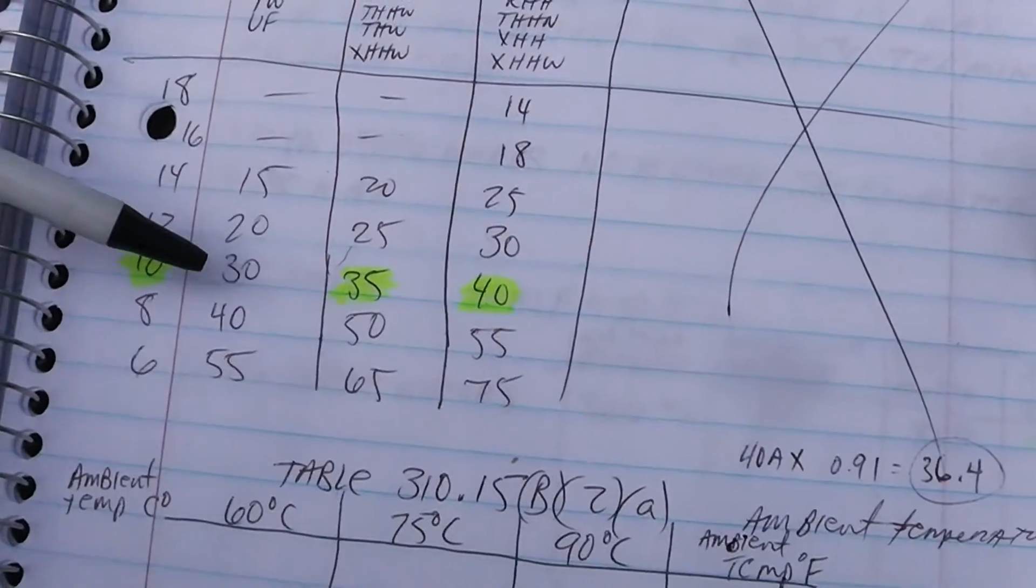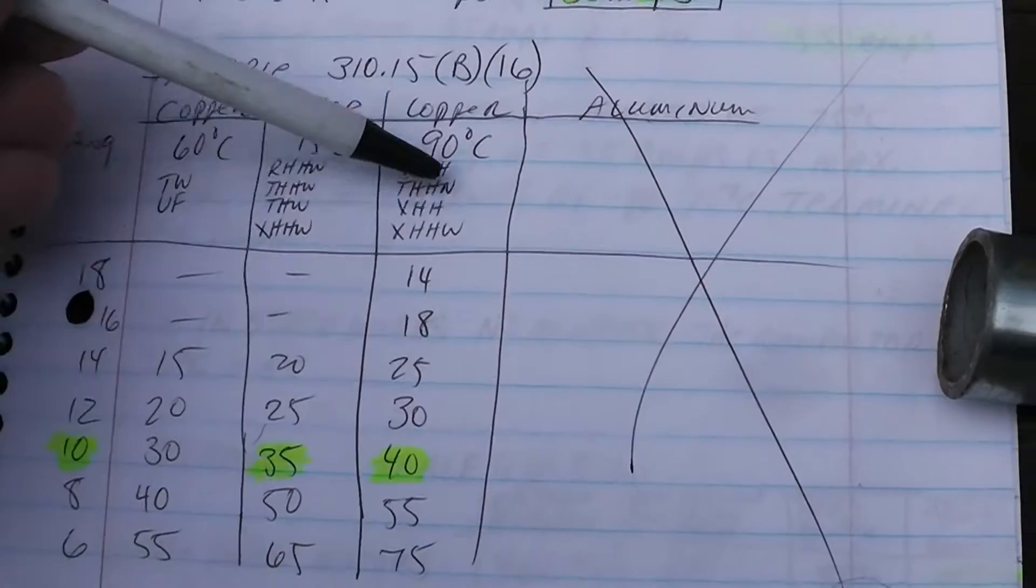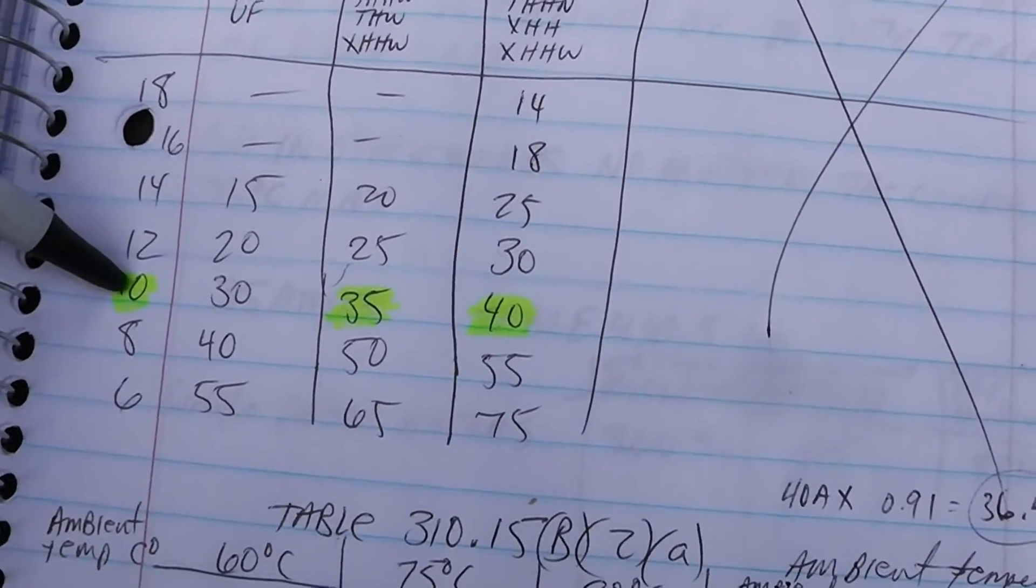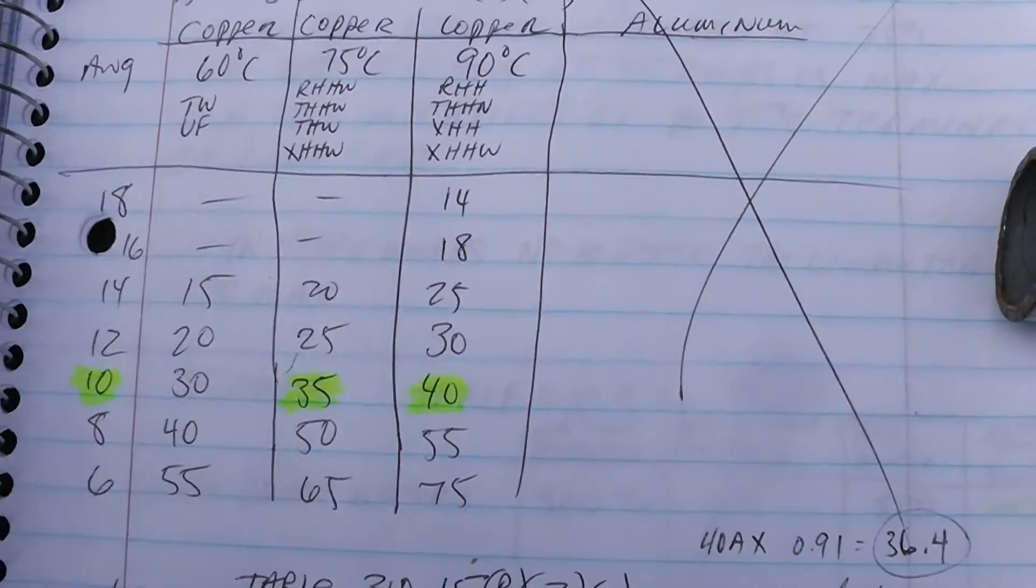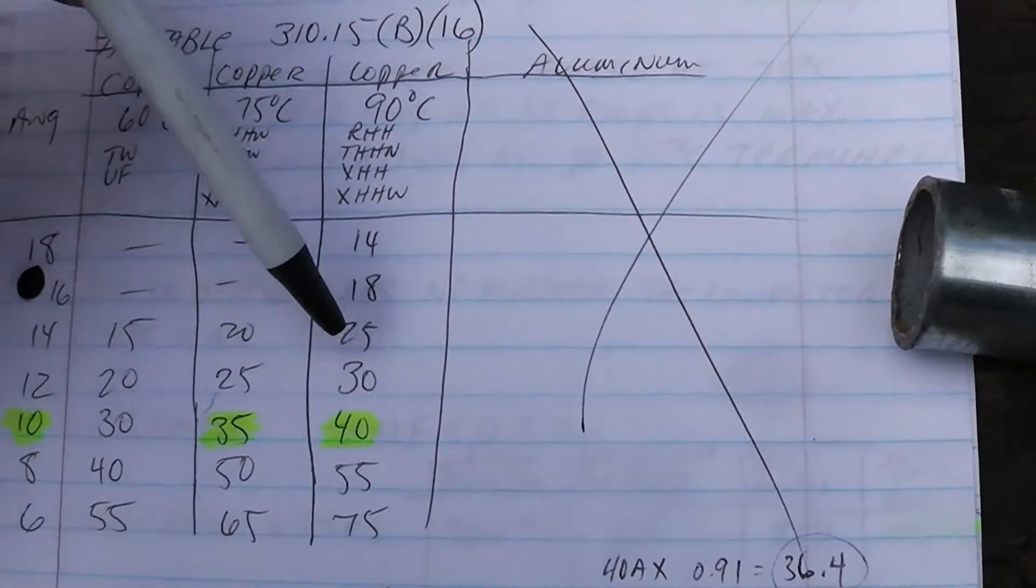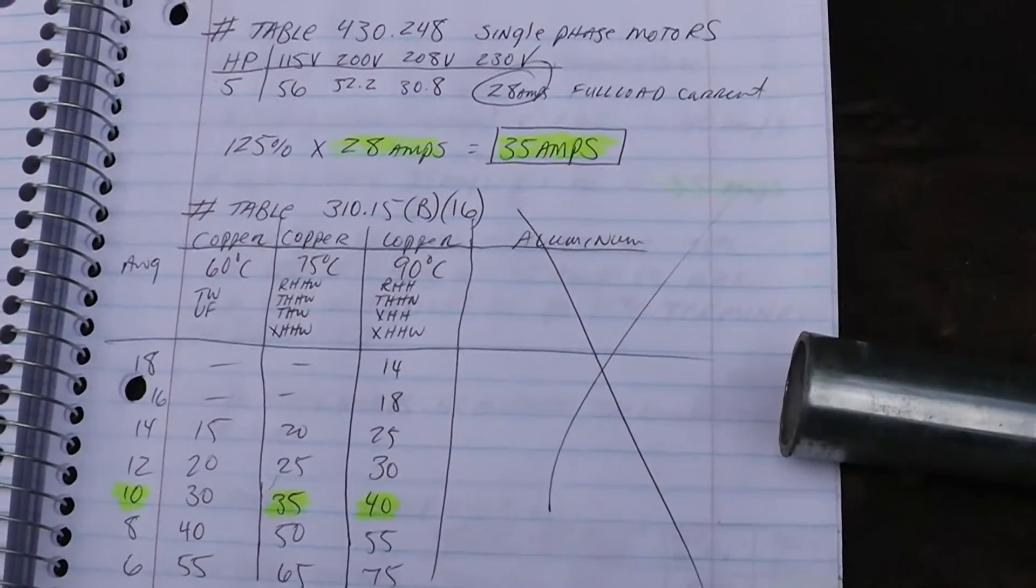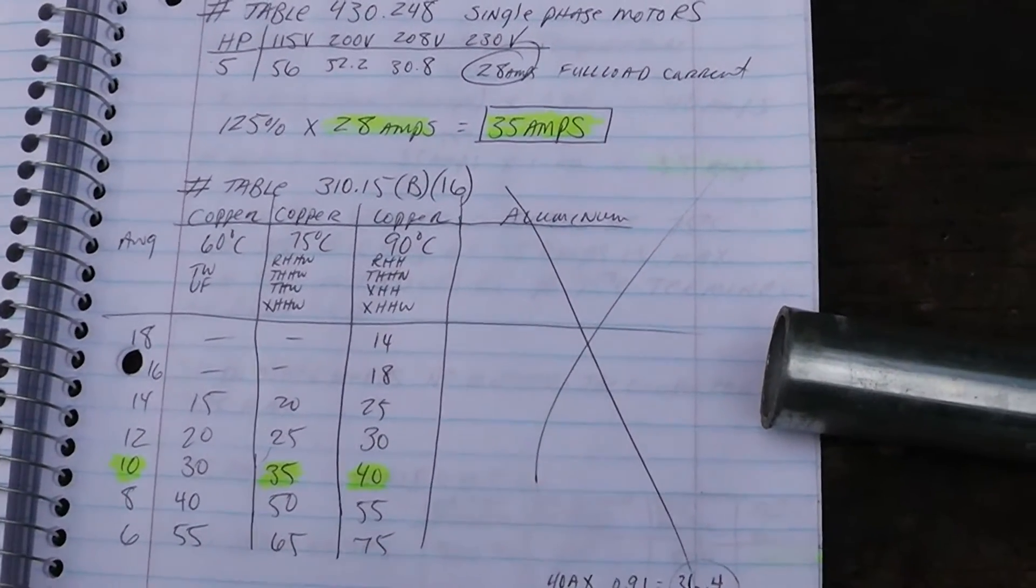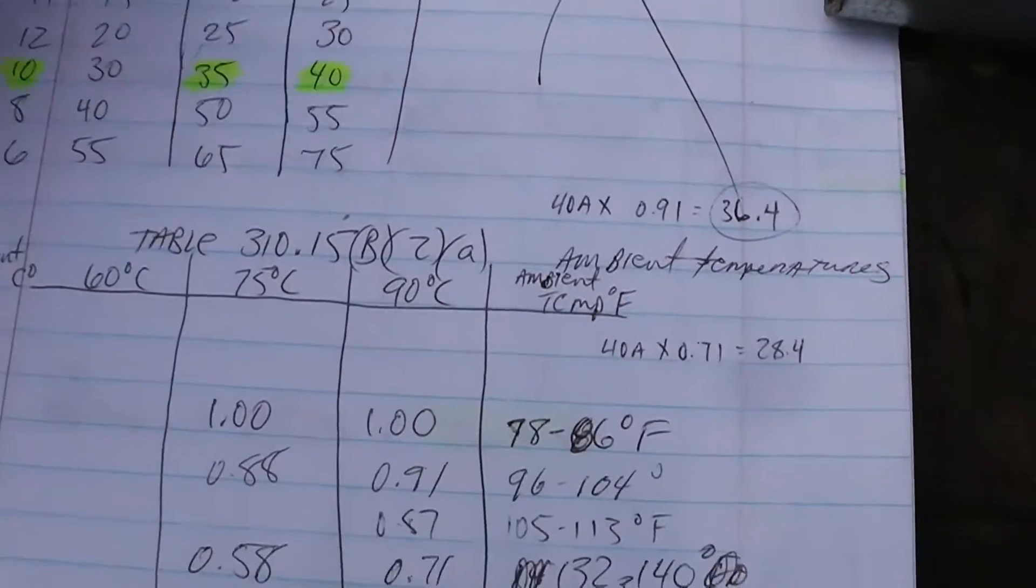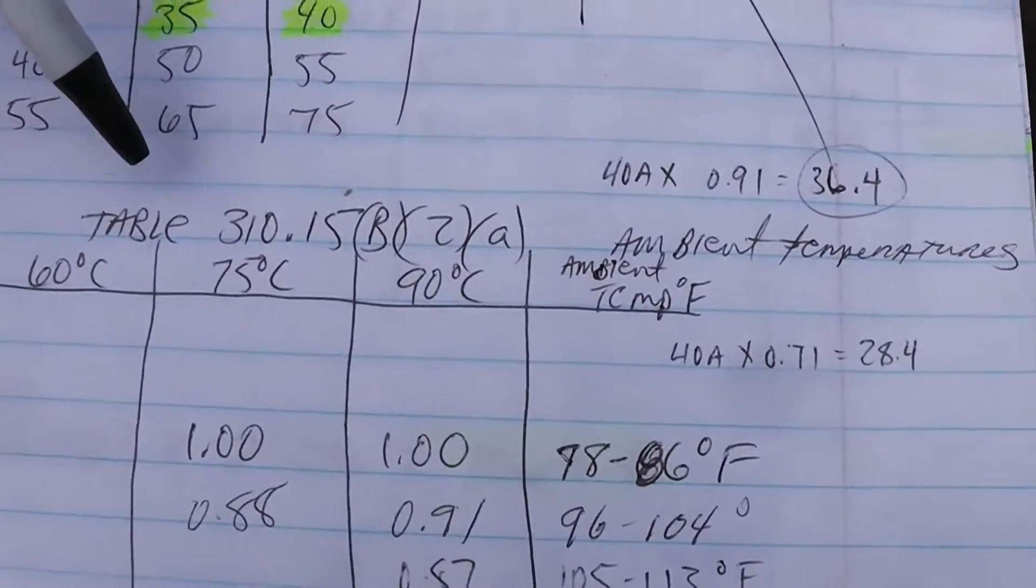I'm going to be using THHN, which gives me the highest insulation value. We need 35 amps and we can use number 10. You want to go number 8 or number 6? That's fine, knock yourselves out, but I'm doing the minimum requirements. I know a lot of people who jerk Romex are going to have a problem and say you can't put 40 amps on number 10 wire, and that is true in a residential situation with Romex. I'm not dealing with that.